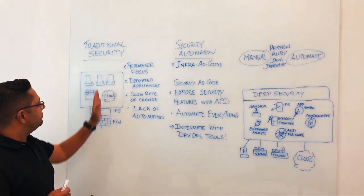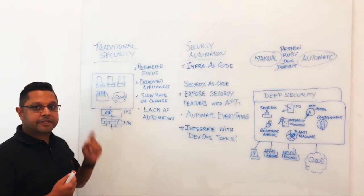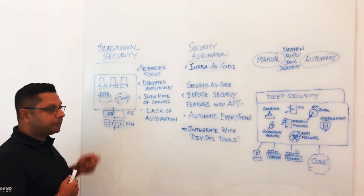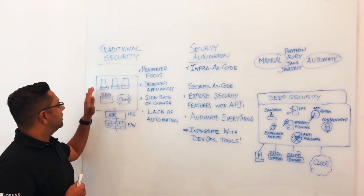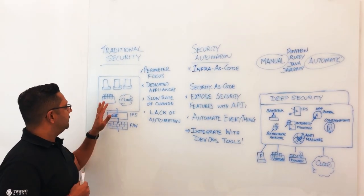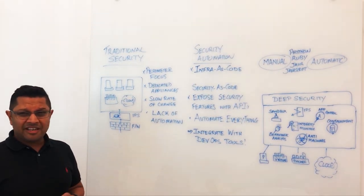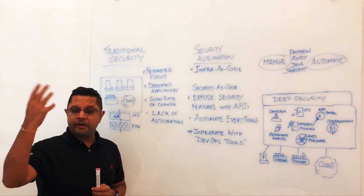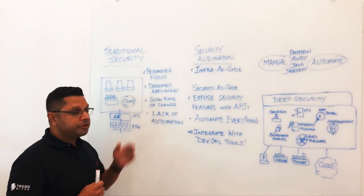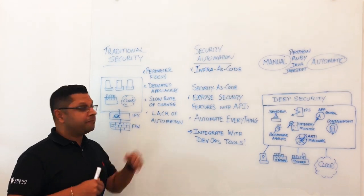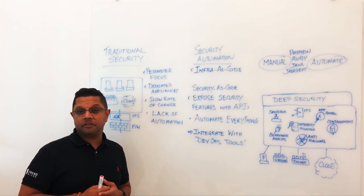First of all, our traditional security model — we still think about it as a perimeter cage with dedicated appliances enforcing those controls. It doesn't matter whether they're in the data center, virtual, or out in the cloud. What this kind of leads to is a perimeter mentality in terms of protection, using these dedicated appliances.